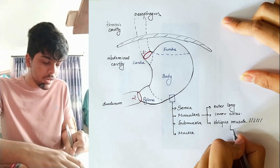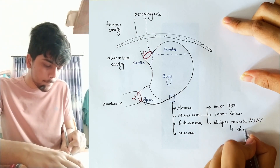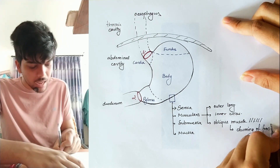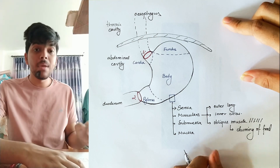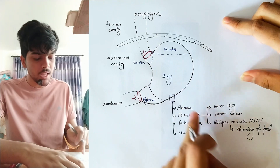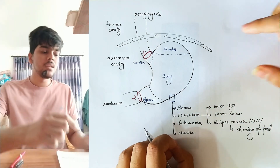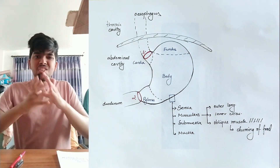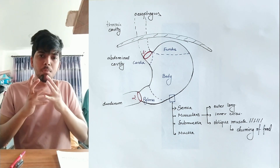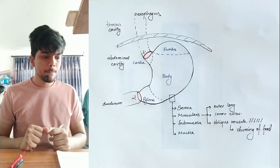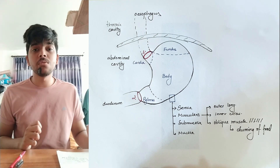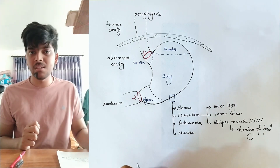The function of the oblique muscle is churning of food. Inside the stomach, both mechanical digestion and chemical digestion take place. Mechanical digestion refers to the churning of food that takes place inside the stomach with the help of the oblique muscle — the stomach churns and breaks the food through muscle movement. Chemical digestion takes place with the help of gastric enzymes secreted by the gastric glands present in the stomach.